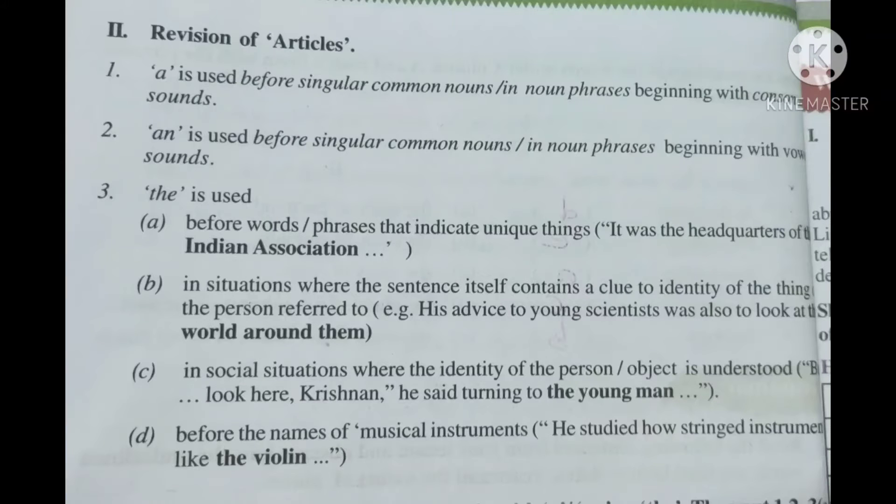Good morning children, today we will learn about articles in English language. There are three articles in English language: a, an and the. A and an are called indefinite articles, the is called definite article.